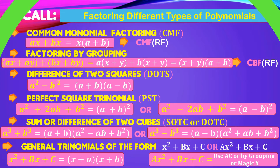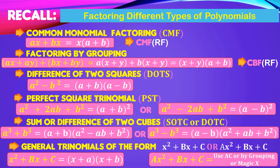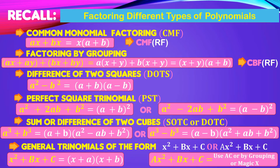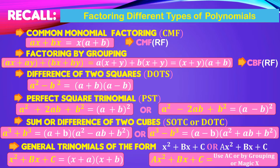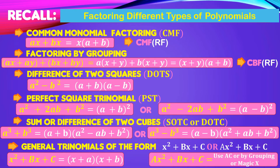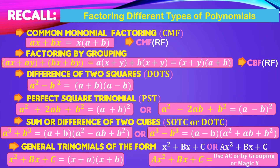You need to recall the factoring of different types of polynomials. We have common monomial factoring or CMF, factoring by grouping, difference of two squares or DOTS, factoring perfect square trinomial or PST, sum or difference of two cubes (SOTC or DOTC), and general trinomials of the form where A equals 1 and A is greater than 1.